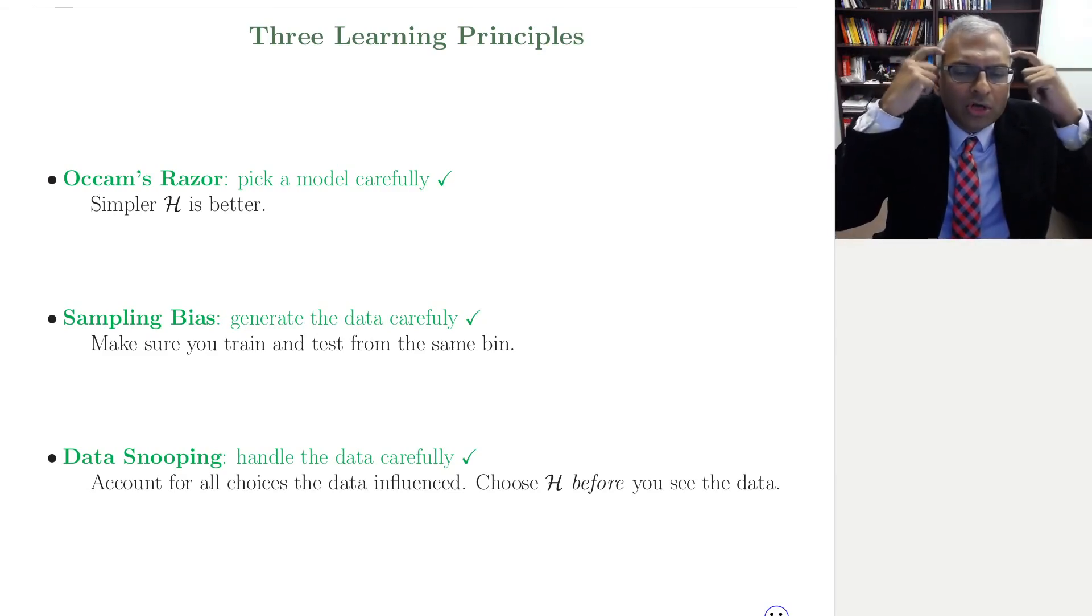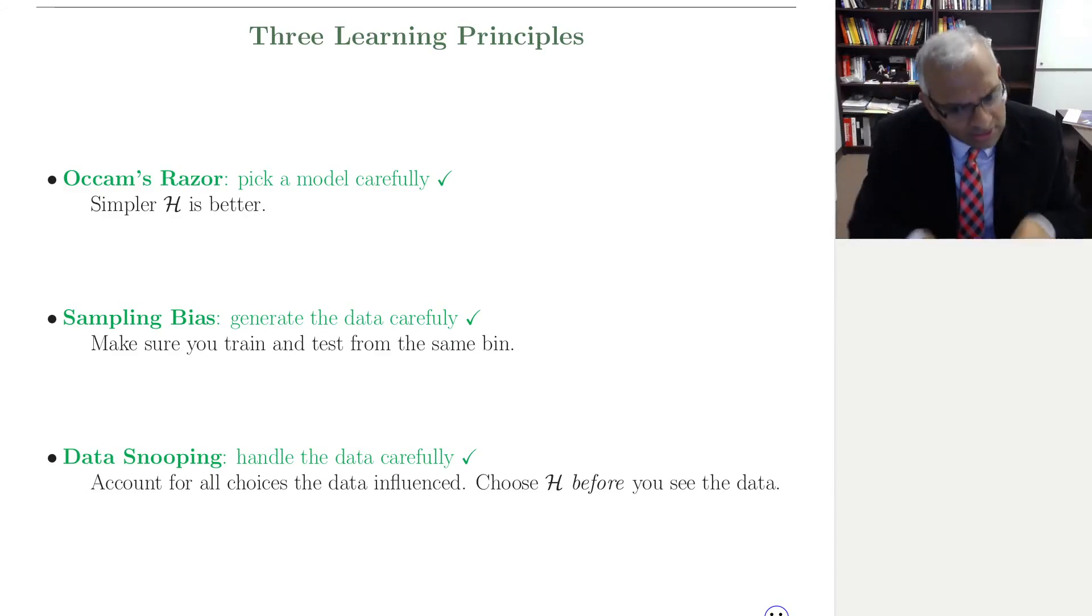Choose your hypothesis set before you see the data. Because we don't know what's going on in your mind. We don't know the complexity of that choice process for you. So you need to nail it down before you see the data, so that the only choice that you're really making now is which hypothesis in your hypothesis set. And that we can account for. So account for all choices the data influenced. And if you know that there are choices that the data influenced, and you don't really know how to account for it, then just be careful.